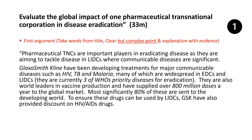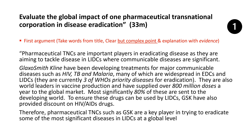I go on to talk about GlaxoSmithKline, how they are developing treatments for HIV, TB, and malaria — three of the priority diseases that the WHO has put forward for eradication. I also note how they produce vaccines — 800 million doses — and 80% of these go to the developing world. I also say that they are providing discounts for LIDCs. My argument here is very strong in saying that GlaxoSmithKline are key players in actually trying to eradicate disease, particularly in LIDCs where there are a lot of communicable diseases.